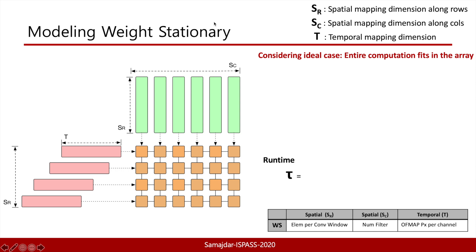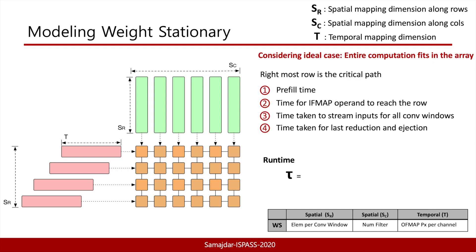Next we show an alternative mapping strategy called weight stationary. Again we assume the entire computation fits into the array. In this mapping, the elements of the filter are pre-filled into the array from the top edge and stored for computation. The corresponding input elements are then streamed from the left edge and partial sums are generated each cycle. The partial sums are reduced across rows to each column, generating one output pixel at the bottom edge. The rightmost row is in the critical path. The runtime considers four steps: SR-1 cycles to pre-fill the array from the top, SC-1 cycles for the first input element to reach the last row, T cycles to stream the inputs, and SR-1 cycles for reduction and ejection of the final output pixel.